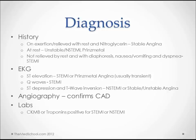If we have chest pain on exertion that's relieved by rest and nitroglycerin, that's going to be stable angina. Chest pain at rest is going to be either unstable angina, NSTEMI, or Prinzmetal's angina. If it's not relieved by rest and it's accompanied by diaphoresis, nausea, vomiting, and dyspnea, then it could be ST elevation MI.